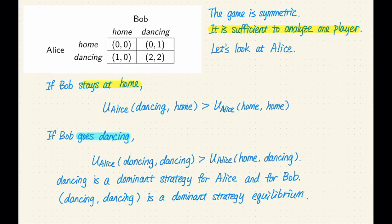So what happens if Bob stays at home? If Bob stays at home, we are looking at the left column right here. I've highlighted the left column. And given the left column, what happens if Alice goes dancing versus Alice stays at home?